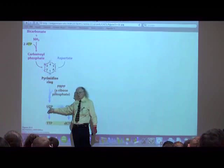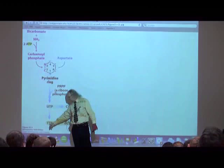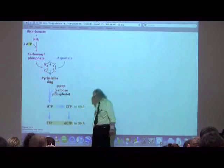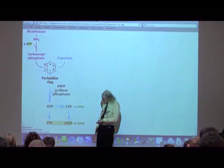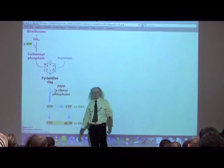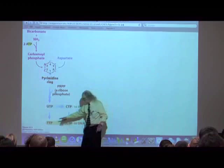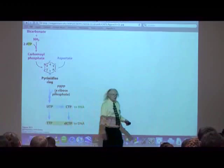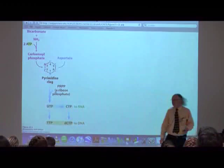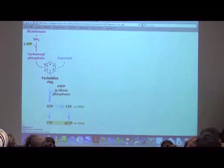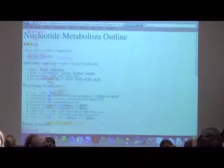UMP is converted to UDP by adding a phosphate, then into UTP by adding another phosphate. Then UTP is converted into CTP. UDP ultimately also gives rise to dTTP — and when you see the D, that refers to deoxy. I use DTTP to refer to thymidine triphosphate.